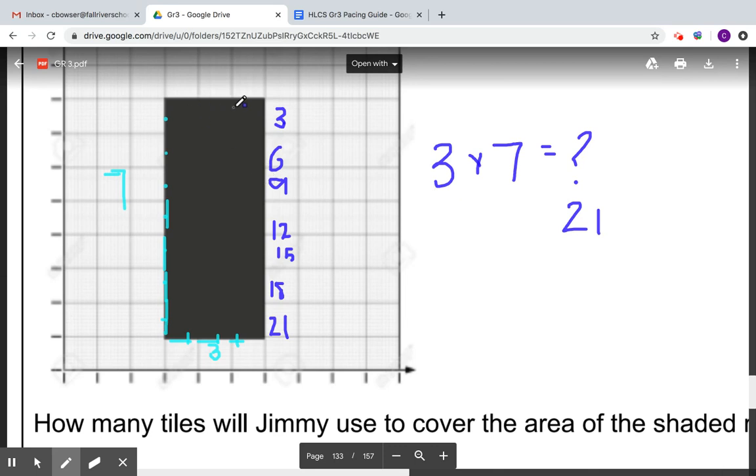So I counted one, two, three, four, five, six, seven, eight, nine, 10, 11, 12, 13, 14, 15, 16, 17, 18, 19, 20, 21. So seven times three is 21.